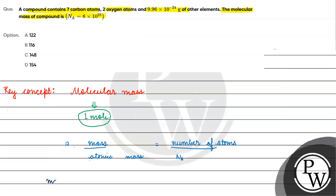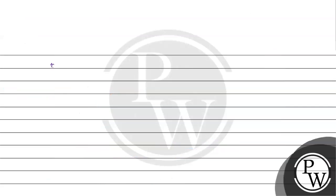If we have 7 carbon atoms, the mass of 7 carbon atoms equals (1 / Avogadro's number) × 12 × 7. Here, the atomic mass of carbon is 12 grams per mole, and we multiply by 7 because there are 7 carbon atoms.